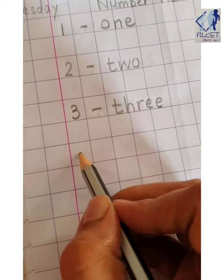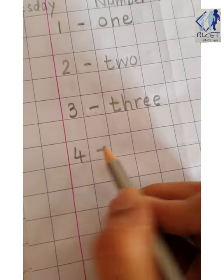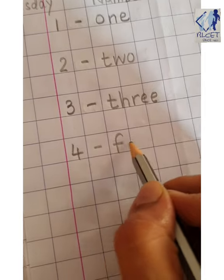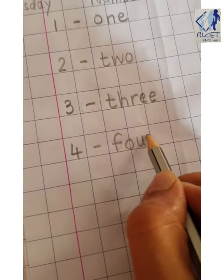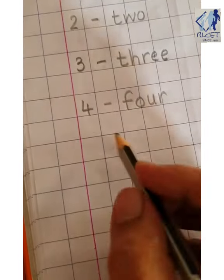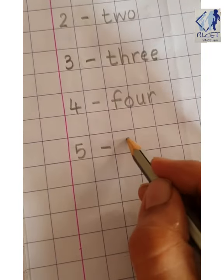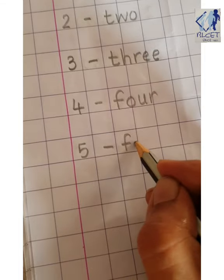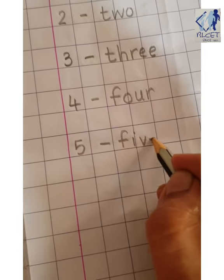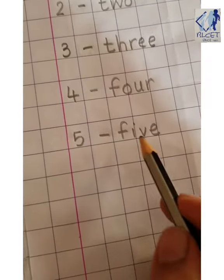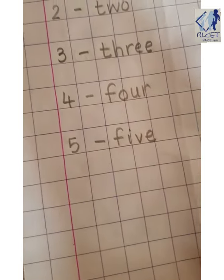Leave 1 box. And then write 4. Spelling of 4. F-O-U-R, 4. Leave 1 box. Every time you write a number, you have to leave the box. F-I-V-E, 5.